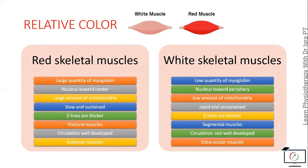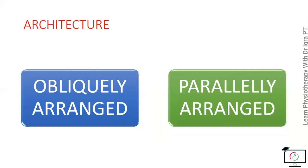Examples of red skeletal muscles are the postural muscles, while the segmental muscles are mostly white muscles. Circulation is well developed in red skeletal muscles and not well developed in white skeletal muscles. All the extensor muscles are red while the extraocular muscles are white skeletal muscles.